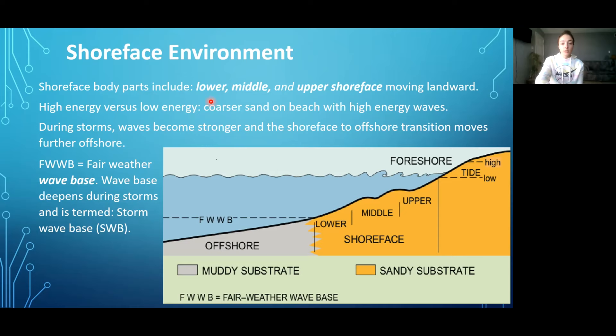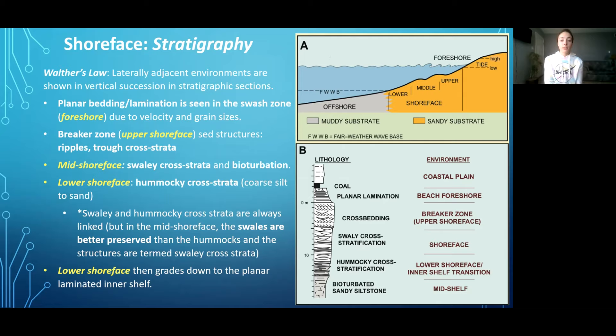Finally, to get to the stratigraphy of shoreface environments, we have the figure on the upper right showing the lower, middle, and upper shoreface environments, and now we have a stratigraphic column to go with that figure. I'm going to restate Walther's Law, which I've talked about in previous lectures, which basically states that laterally adjacent environments are shown in vertical succession in stratigraphic columns.